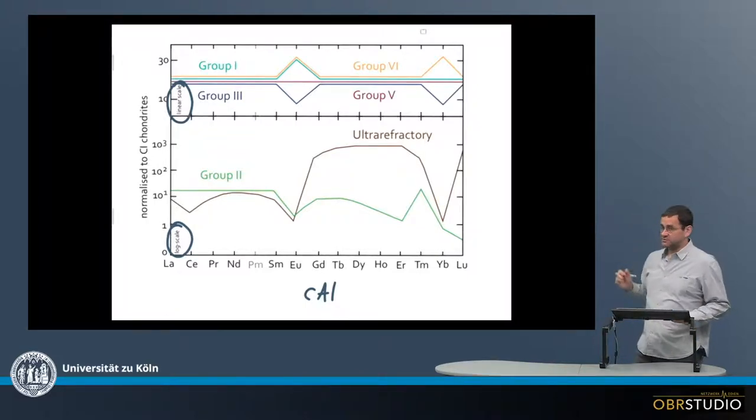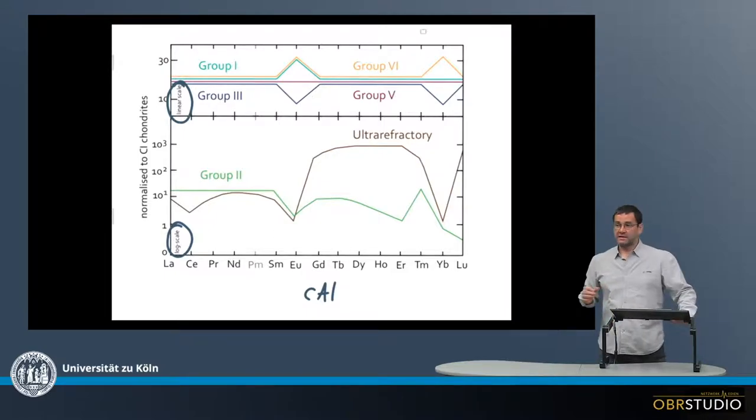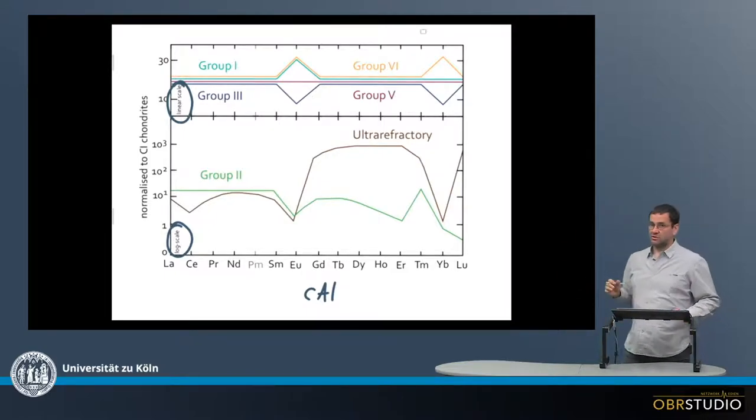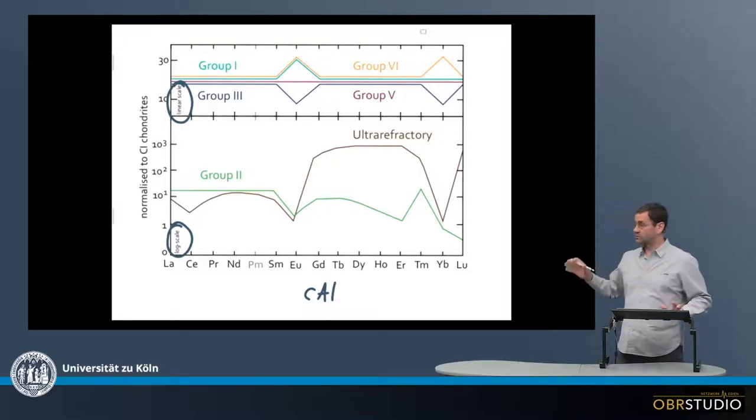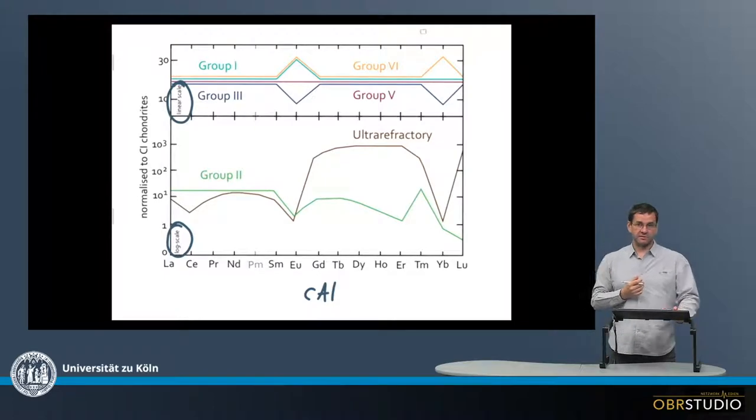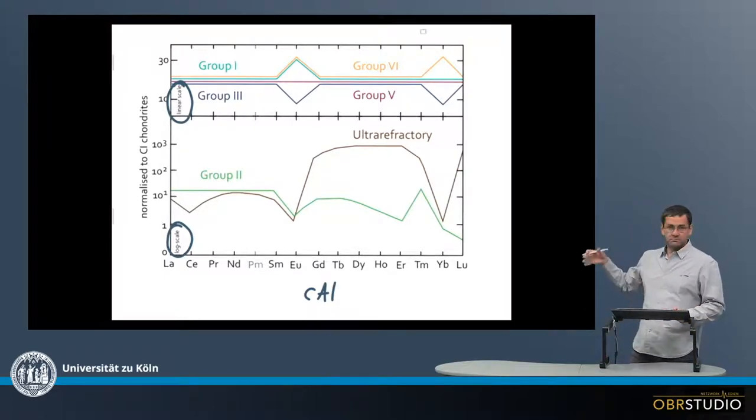Now there are six different groups here, and part of these groups are called simply group one to group six, although group four does not exist here because it refers to some ferromagnesian objects, which means we need another group, a sixth group, and this is the ultra-refractory group here.